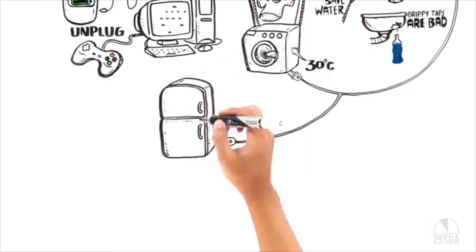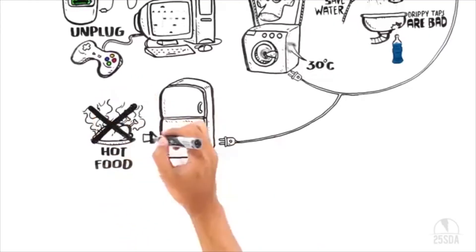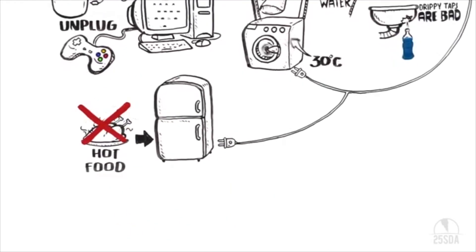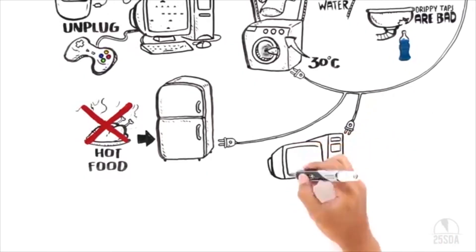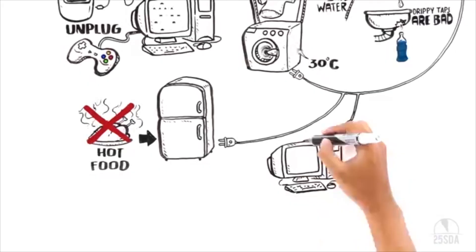Close the fridge door, and never put a hot meal in the fridge - it takes a lot of energy to cool it down. Do you know about Energy Star labels? Well, products with Energy Star labels use much less energy than the others.